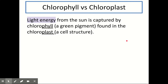I want to cover the difference between chlorophyll and the chloroplast, because a lot of people get these two mixed up. Light energy from the sun is captured by chlorophyll, which is a green pigment — that's why plant cells are green. That chlorophyll is found within the chloroplast, which is the cell structure. When we did plant cells back in Key Area 1 of Unit 1, you would label the chloroplast. Within the chloroplast is the chlorophyll, which is a pigment that traps the light energy from the sun.